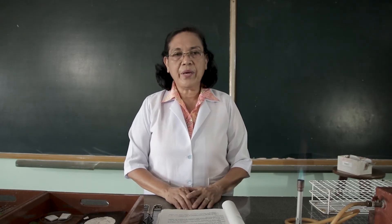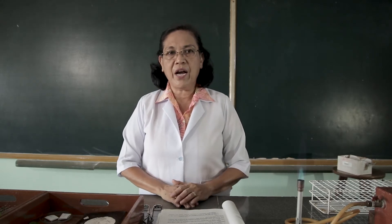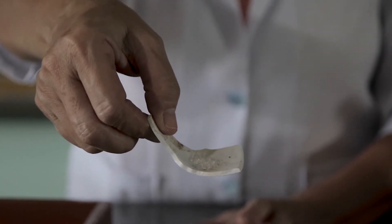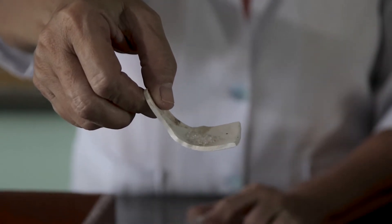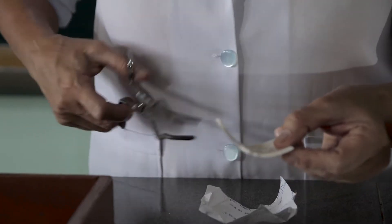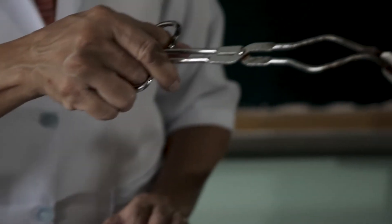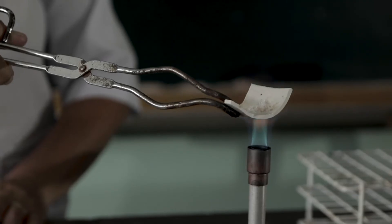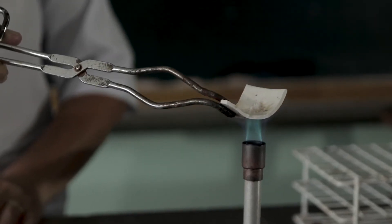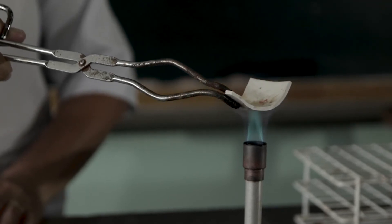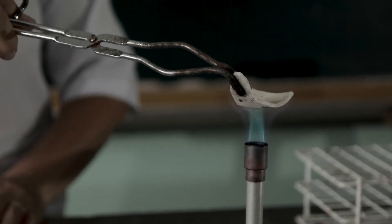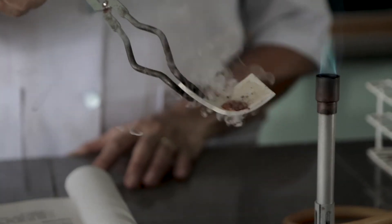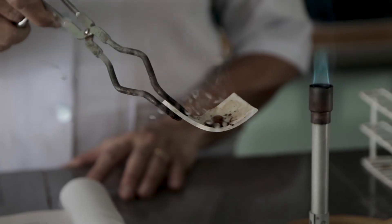First, we are going to heat the table sugar, or chemically known as sucrose. This is the table sugar. Take note of the color of the table sugar before it is heated. Then, let us heat this over the flame. Take note of what happens to the heated table sugar.